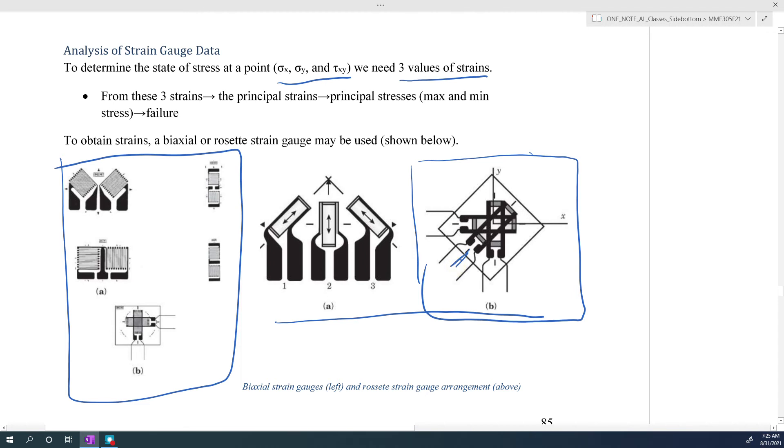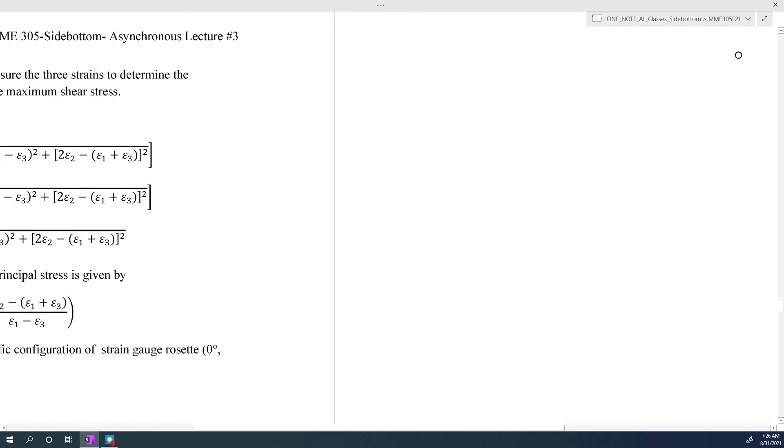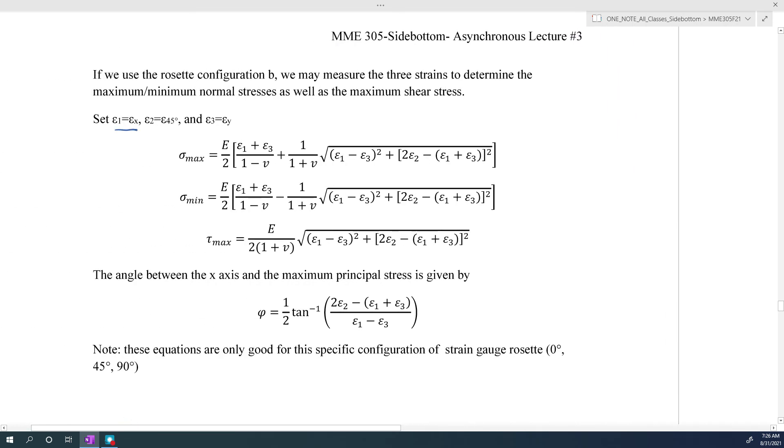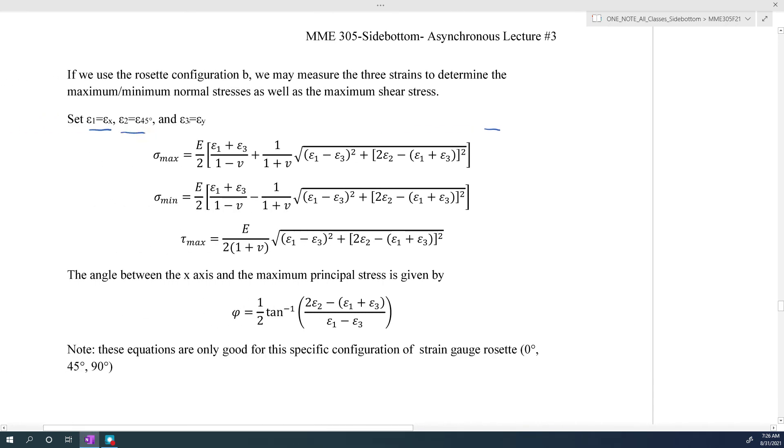If we have this type of arrangement for our strain gauges, we can use the following method in order to determine our maximum and minimum normal stresses, as well as the maximum shear stress. If we set our first strain equal to epsilon x, our second strain equal to the strain gauge that's at 45 degrees in the diagram above, and the third strain gauge along the y-axis, we can plug them into these formulas that are shown below. As long as we know the elastic modulus and the Poisson's ratio of the material, we can determine the maximum and minimum principal stresses, as well as the maximum shear stress.